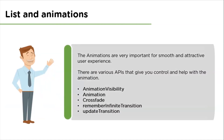Just like lists, animations are also very important for a smooth and attractive user experience. There are various APIs that can give you control and help with animation. They are: AnimatedVisibility, used if you are animating appearance and disappearance; used if you want fine control over animation time; Crossfade, used to switch between composables with a crossfade animation; rememberInfiniteTransition, used if the animation is state-based and infinite; and updateTransition, used if you are animating multiple values simultaneously.